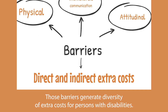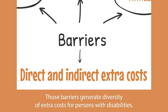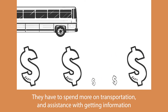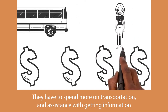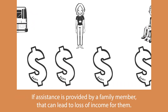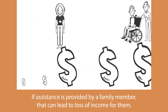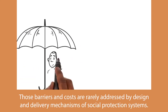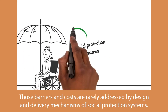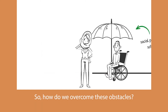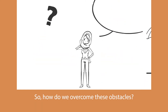Those barriers generate a diversity of extra costs for persons with disabilities. They have to spend more on transportation and assistance with getting information, communicating with staff, and using payment systems. If assistance is provided by a family member, that can lead to loss of income for them. Those barriers and costs are rarely addressed by the design and delivery mechanisms of social protection systems.